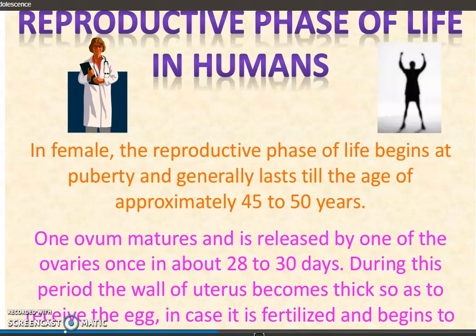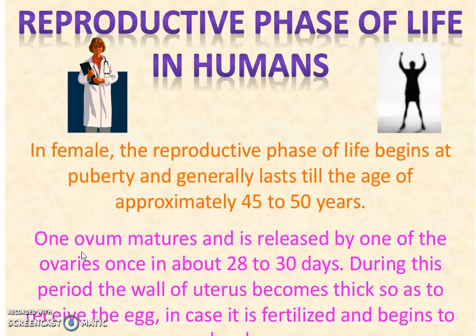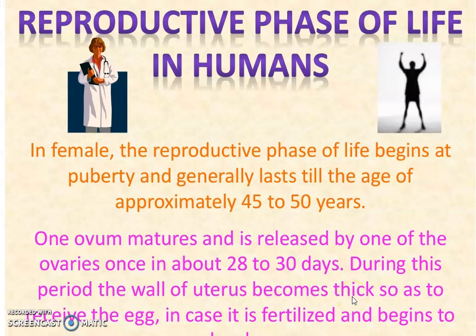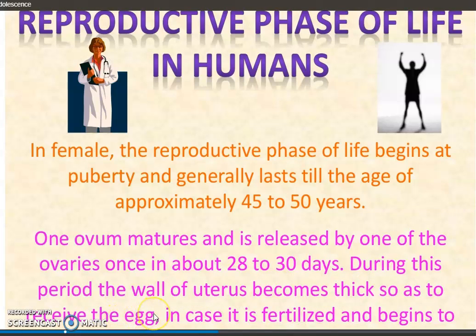Human का reproductive phase 11 साल के बाद adolescence/puberty से start होता है, और up to 45 या 50 साल की उम्र तक रहता है। उसके बाद reproductive system धीरे धीरे work करना कम कर देता है। हर एक ovary से हर month सिर्फ एक ovum release होता है, in about 28 to 30 days। एक बार एक ovary से, अगली बार दूसरी ovary से। इस period में uterus की wall thick होने लगती है।